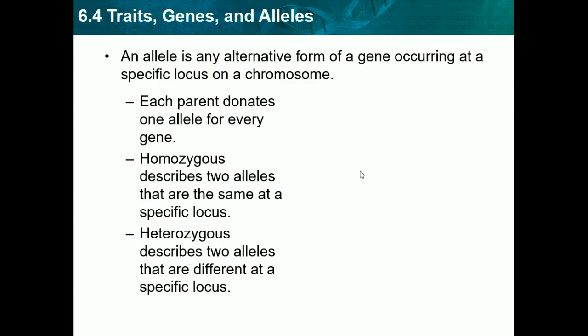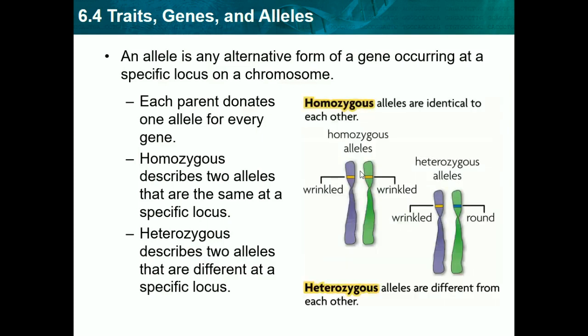That's basically all you need to know. Homozygous alleles are identical to each other — in the top picture, they're in the same exact spot, the same exact wrinkled allele. In a heterozygous, one's wrinkled and one's round, so they're different. And heterozygous alleles are different from each other.